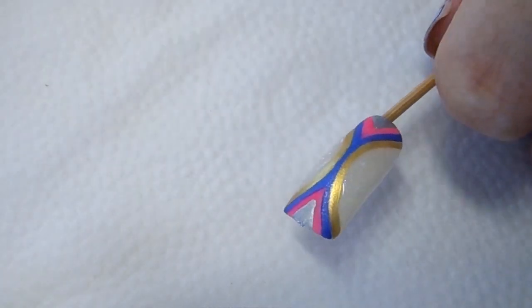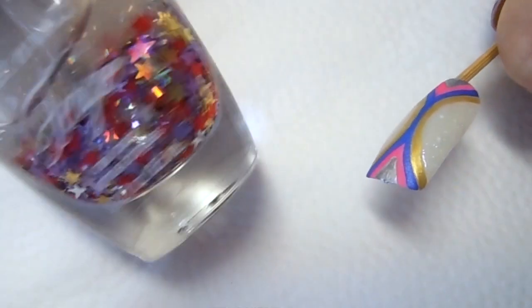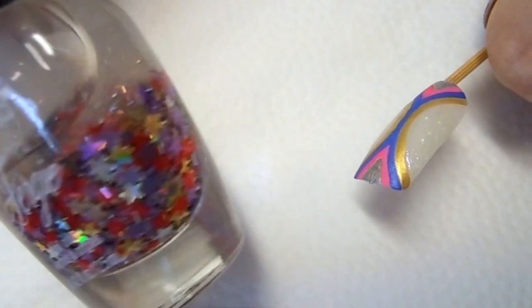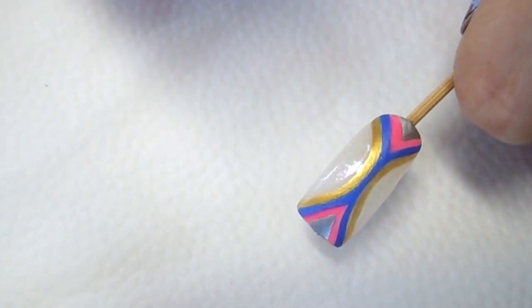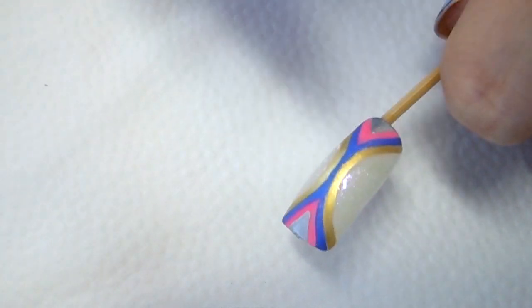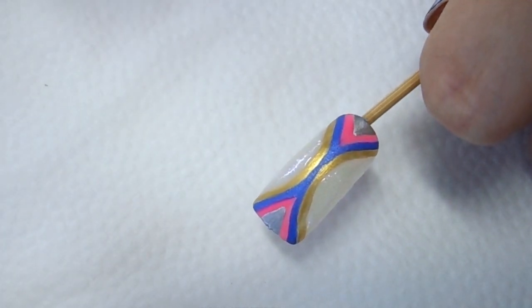Before this gets a chance to dry, we're going to apply some stars from this nail polish. I'm just going to try to get the stars out and apply it to this area and also this area right here where I just applied the nail polish.